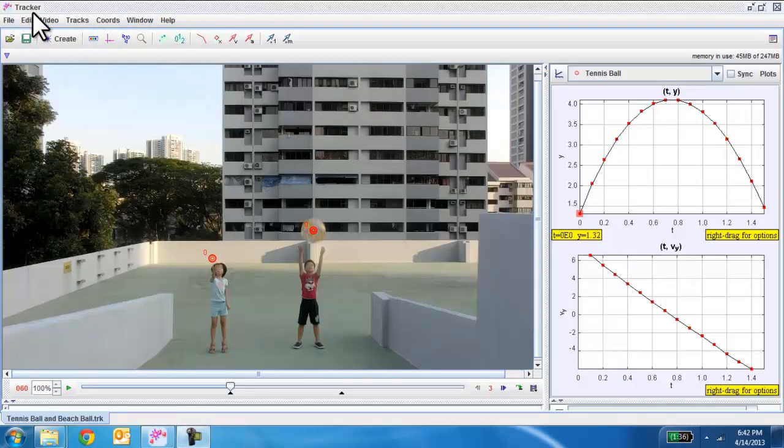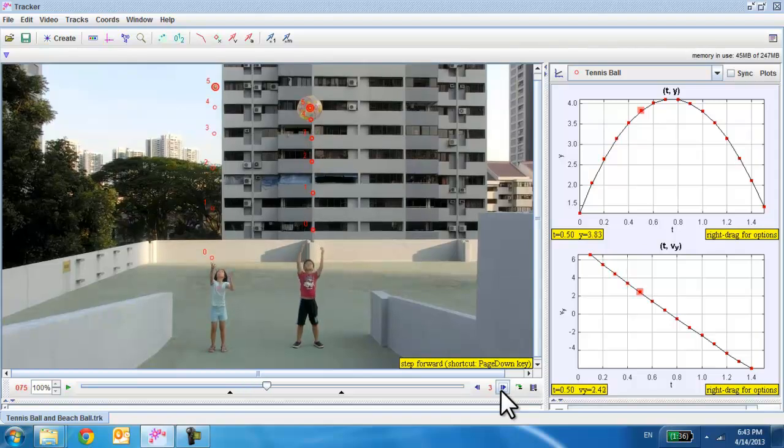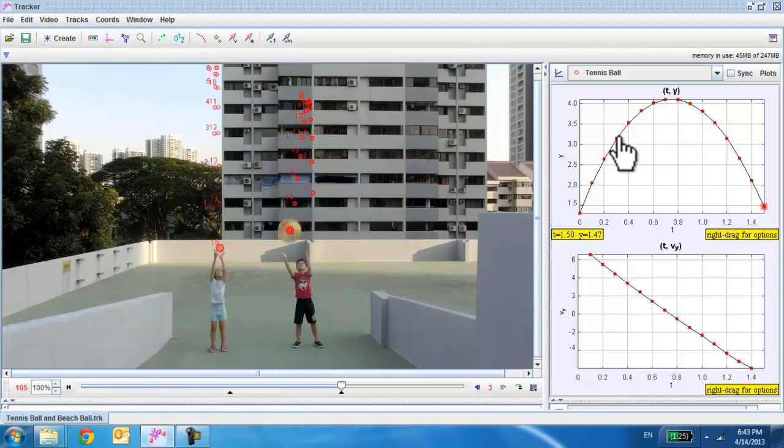I'm using this software called Tracker to help me analyze the motion of the two balls. All I have to do is mark the positions of the balls at every three video frames and the software is able to plot for me the displacement-time graph and the velocity-time graph.